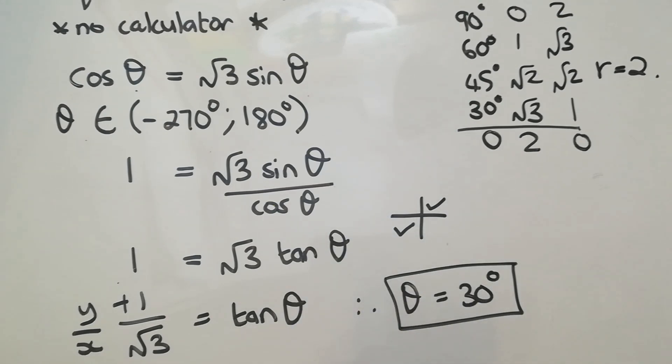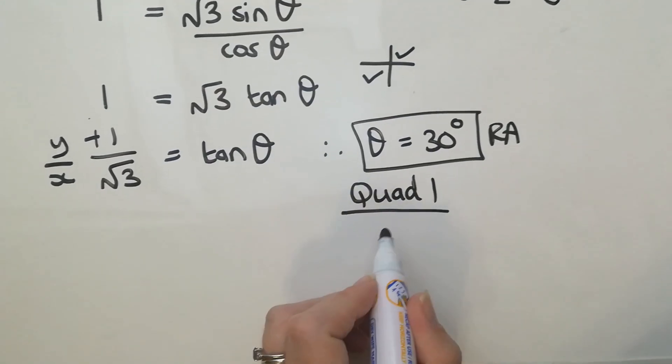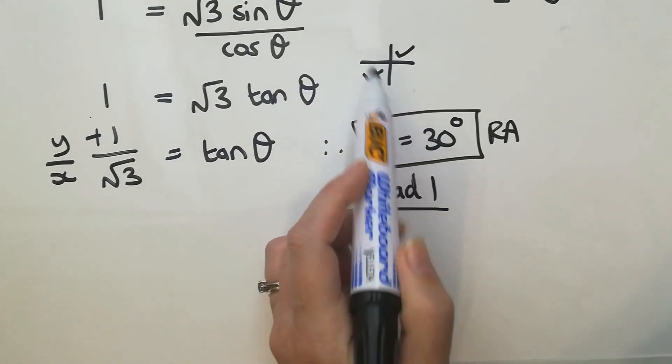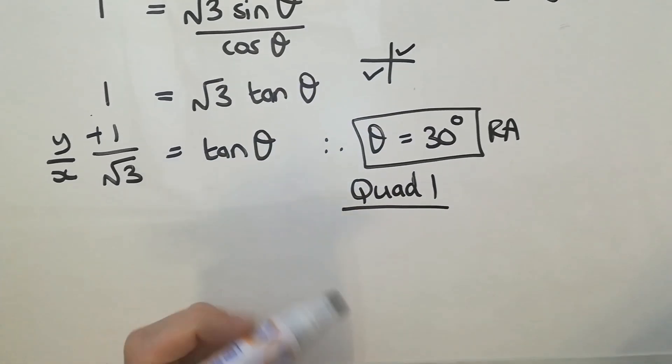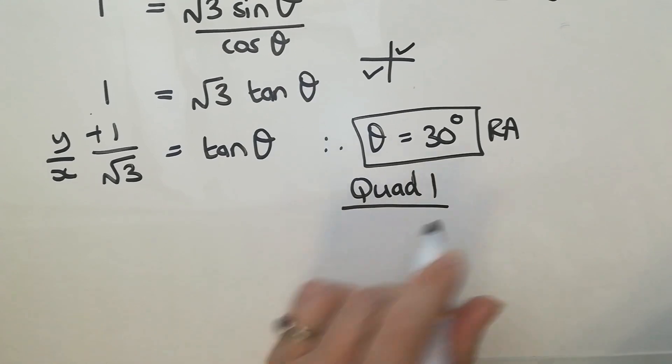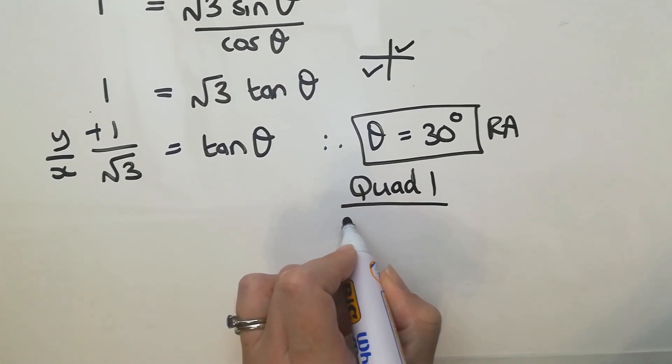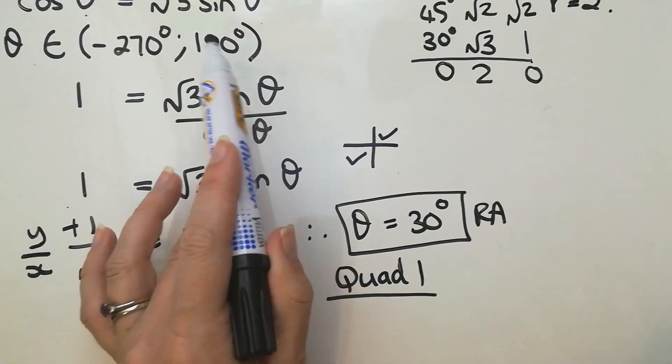So we really only need to do one at this point. I'm only going to do the one in quad 1. If tan was negative, I would only do the one in quad 2 and then it would repeat every 180 to get to the one in quad 4. Okay, so we really only need the one. You can do both if you want to. You will end up with the same answers because of that restriction given.